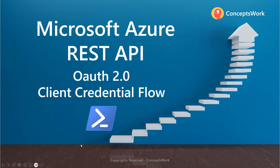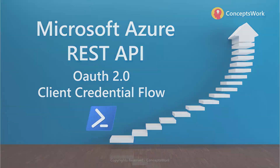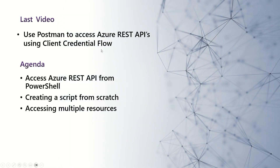Welcome back to the channel. In this video, I'm going to showcase how you can access Microsoft Azure REST APIs with the help of OAuth 2.0 client credential flow. I'm going to use PowerShell to access Azure resources, writing a script from scratch, and I'll show you how to replace a specific URL section where you give the endpoints of the resource you're trying to access.